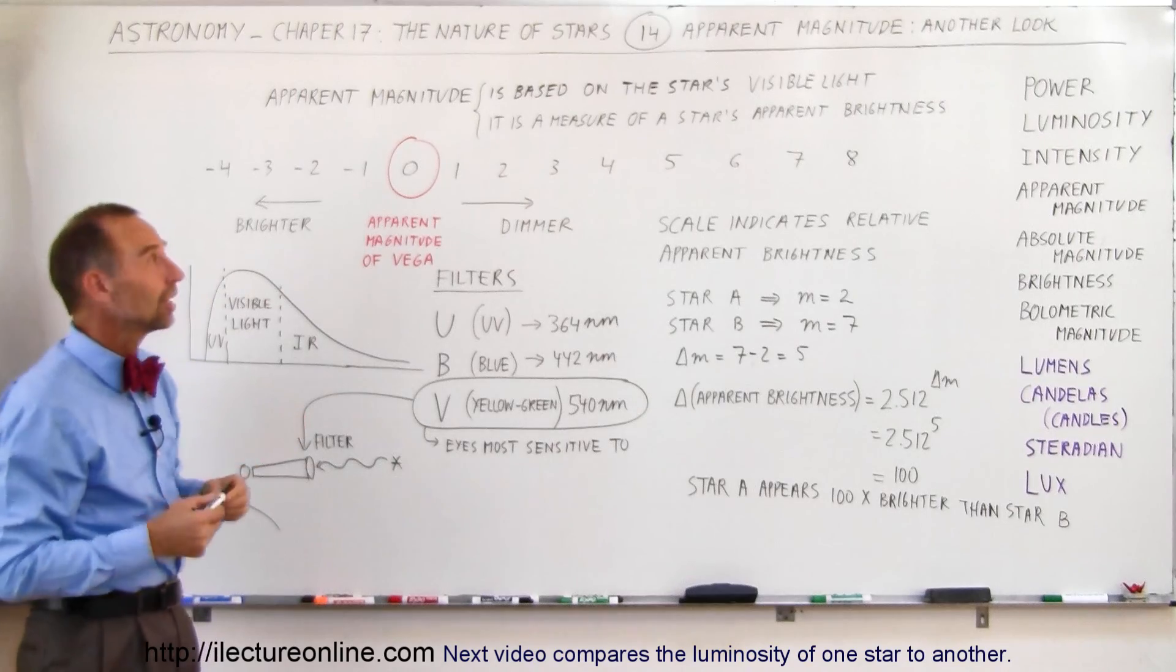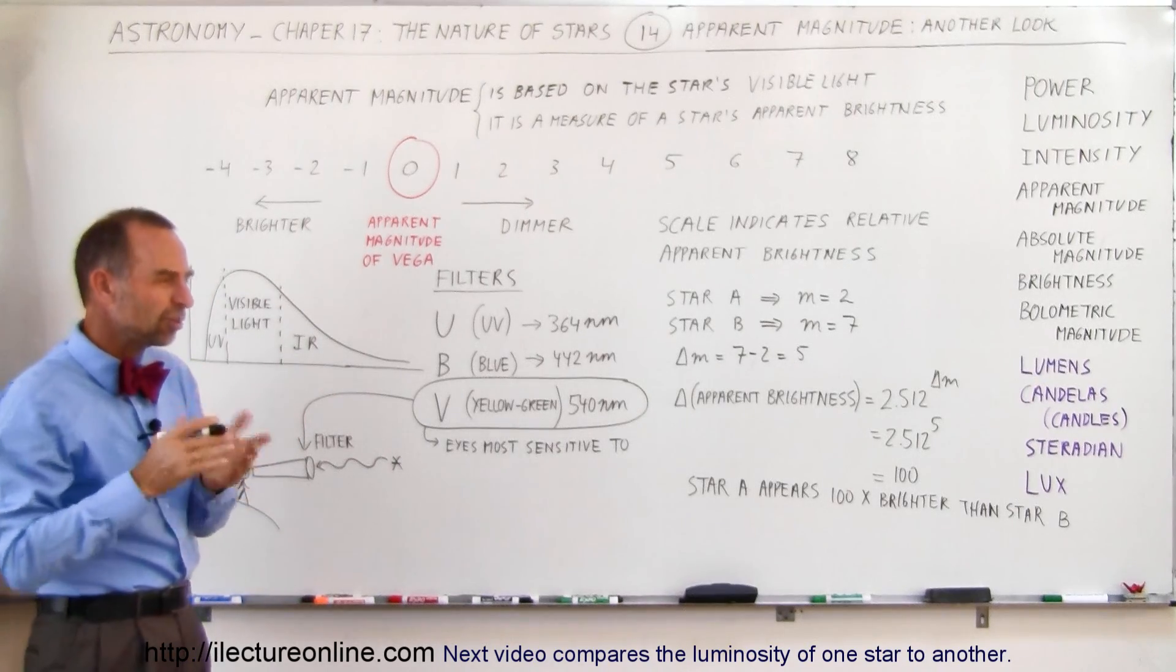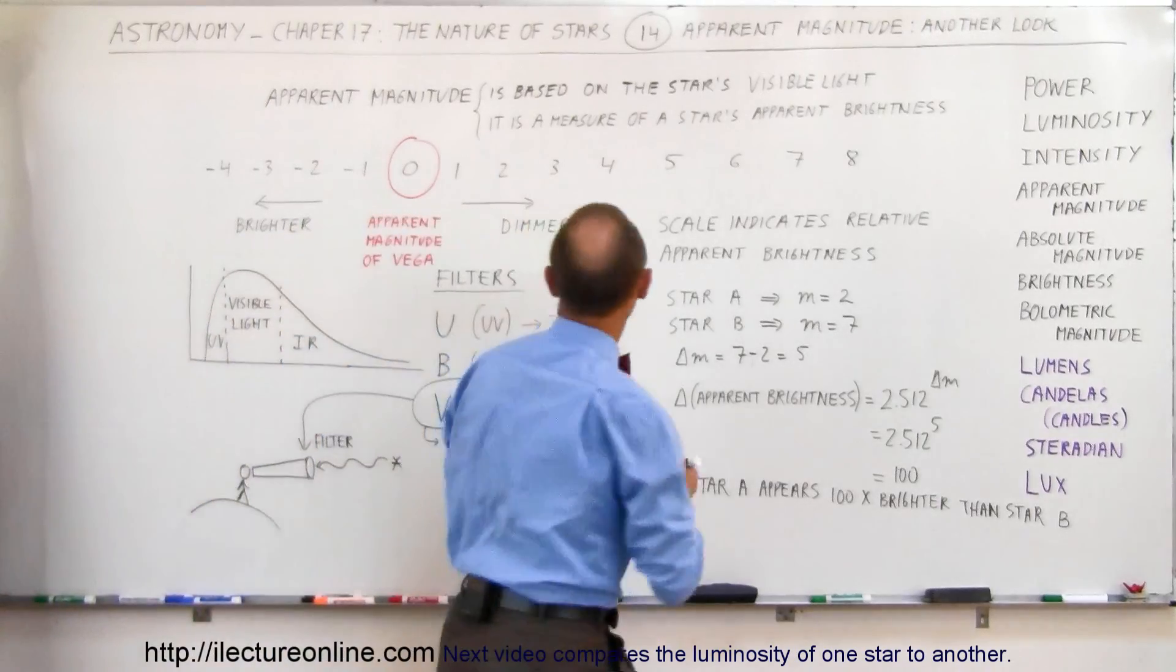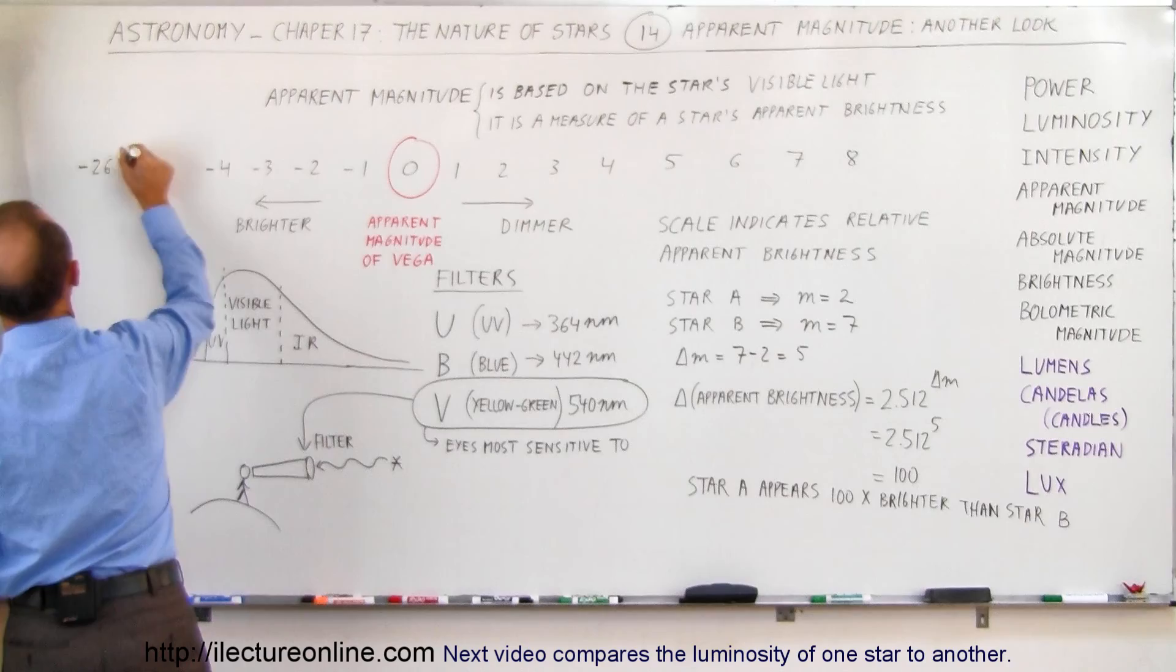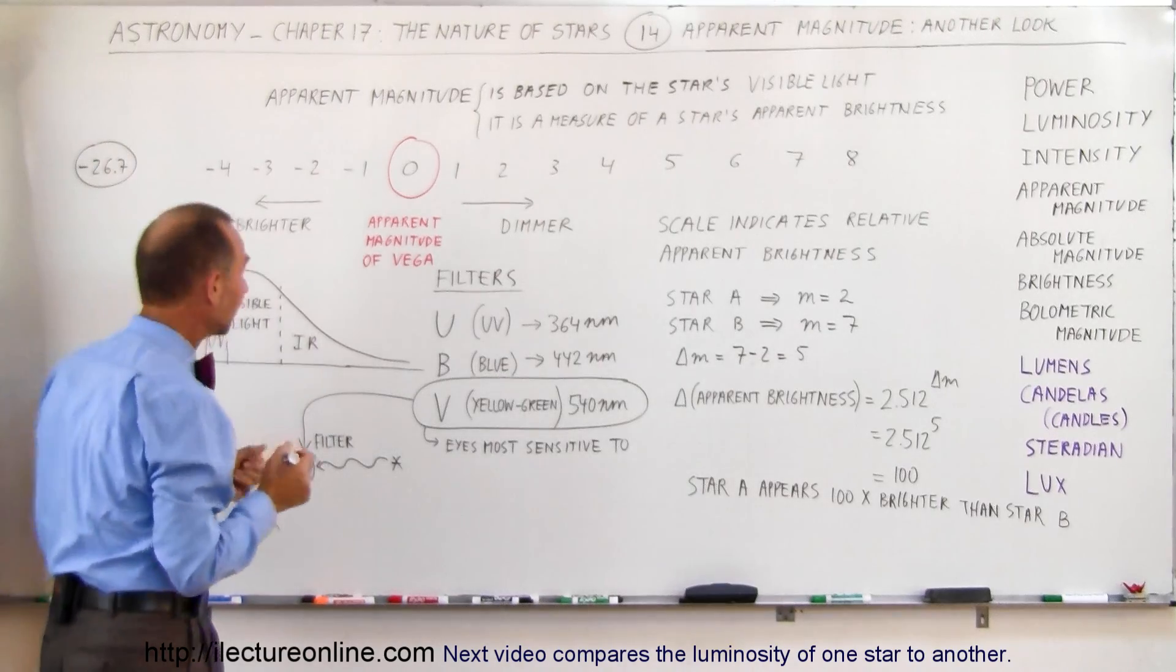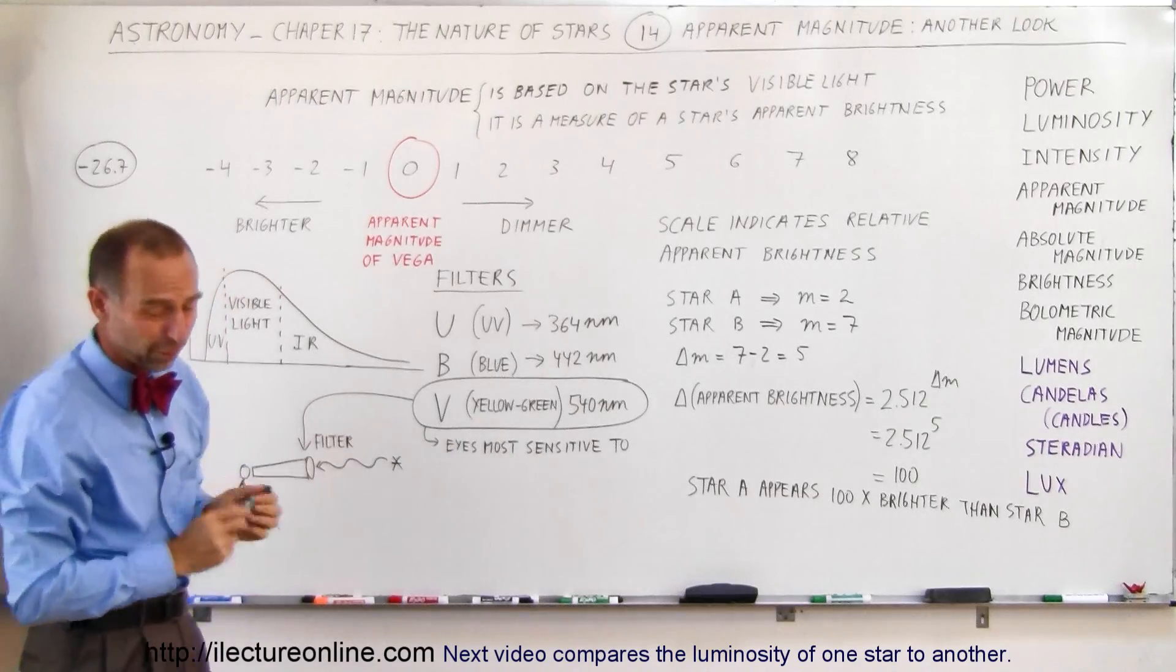Another way to look at it is, we realize that the apparent magnitude of the Sun is minus 26.7, somewhere in that neighborhood. So if we go way over here, we go minus 26.7, that's the apparent magnitude of the Sun. Now notice, what is the difference in magnitudes? Well, that's 26.7.